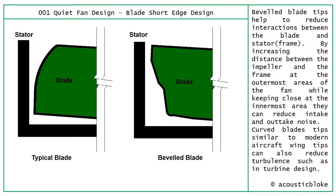Looking at the fan on its side, where the blade comes into close proximity with the stator: a typical blade system leaves a slight gap at the top and sits as close as possible at the bottom. Beveled tip blades help to reduce interaction between the blade and the stator or frame. By increasing the distance between the impeller and the frame at the outermost area while keeping it close at the innermost area, they can reduce intake and outtake noise. Curved blade tips, similar to modern aircraft wingtips, can also reduce turbulence, as seen in wind turbine design.